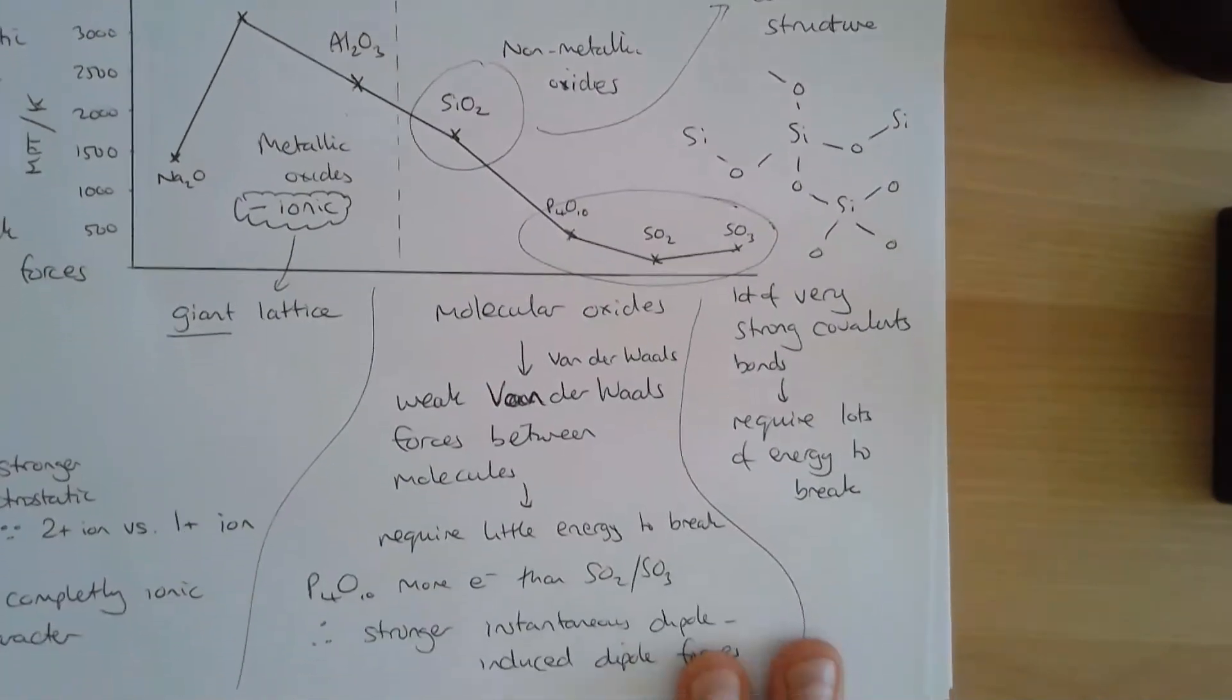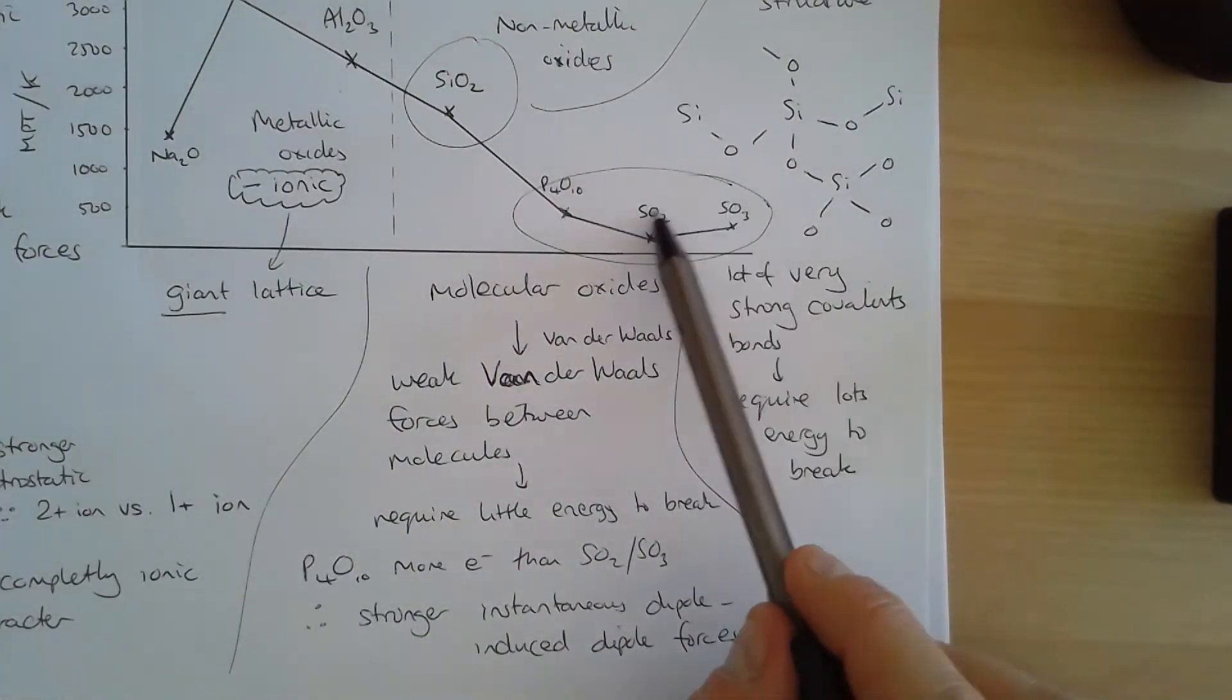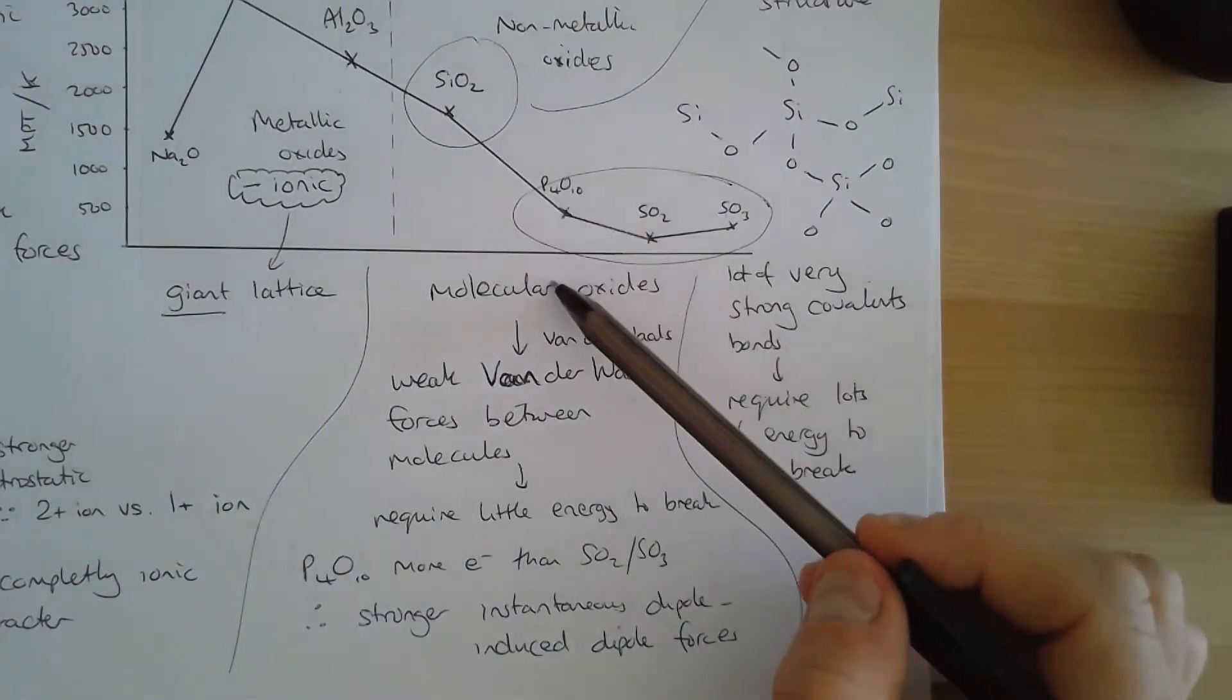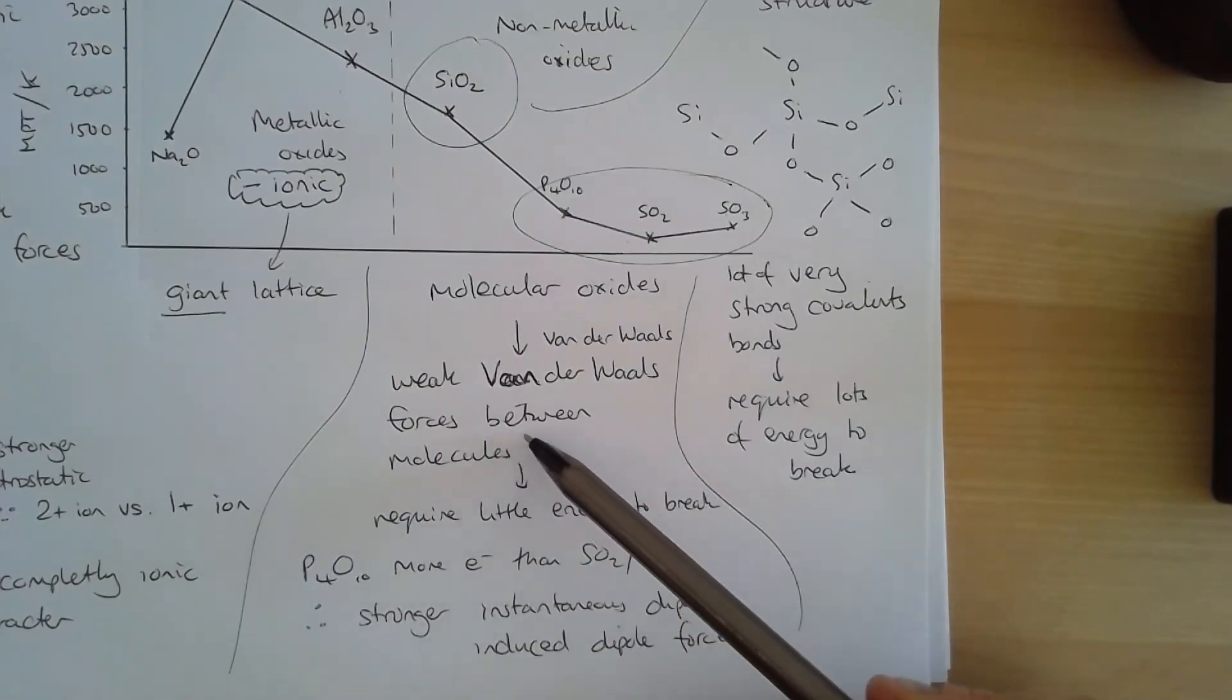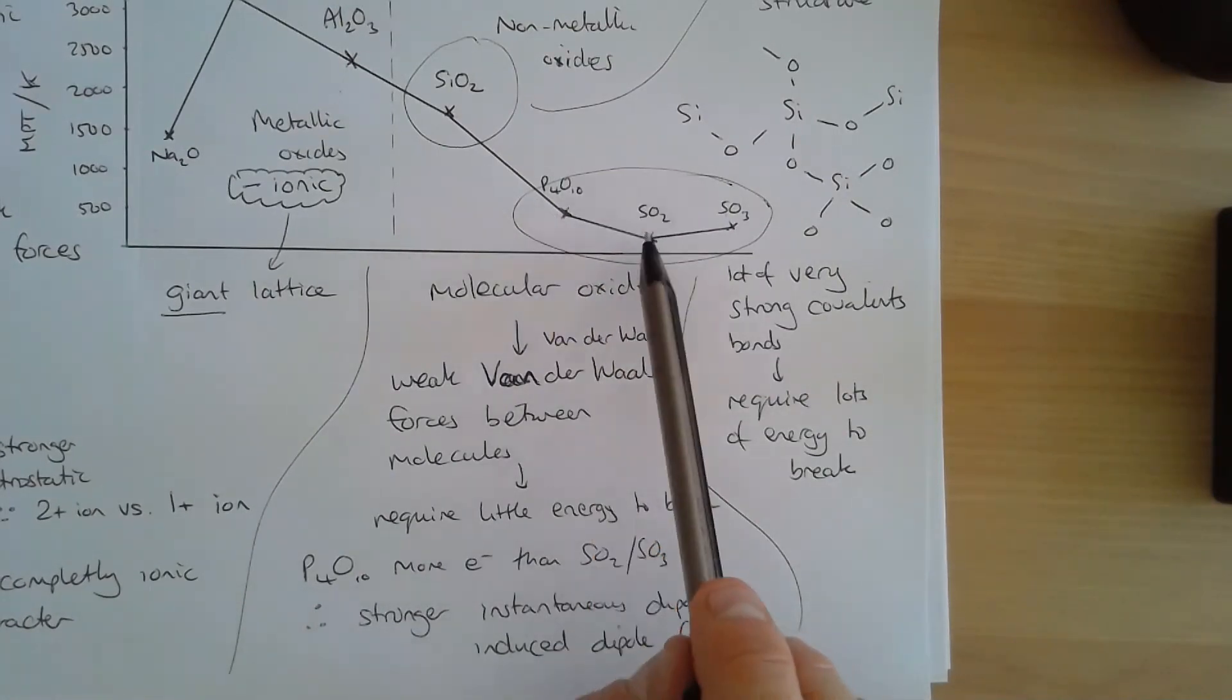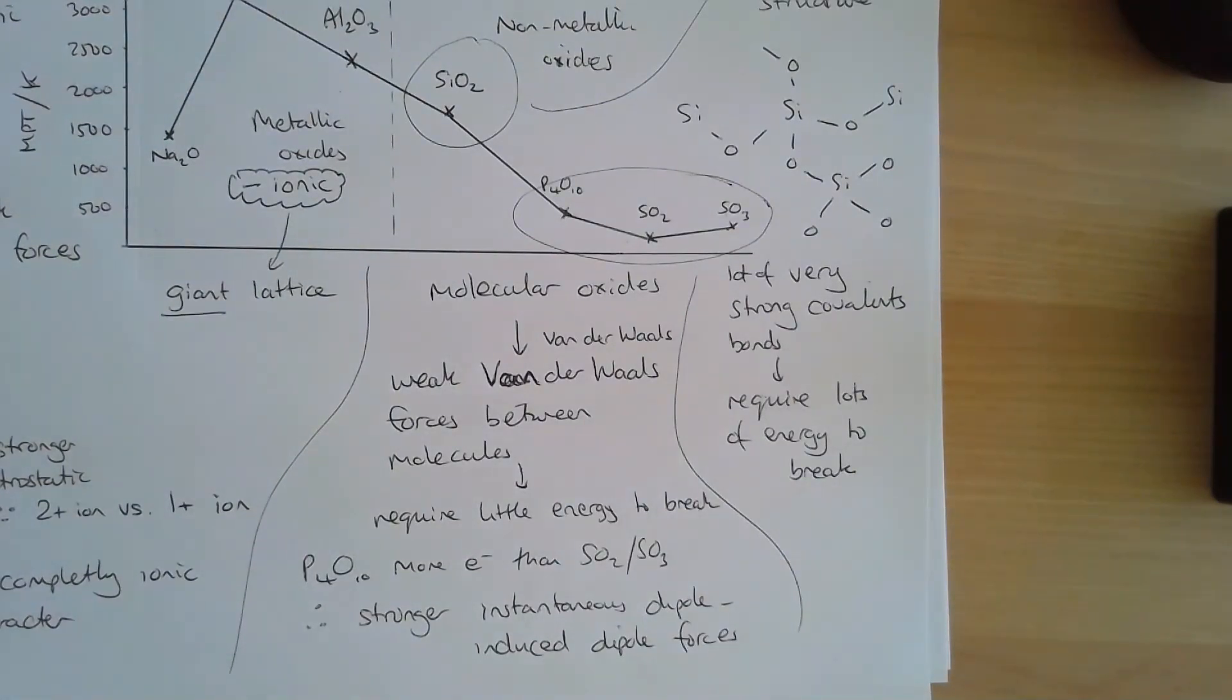And then finally, we have our molecular oxides, phosphorus oxides and the two sulfur oxides that we need to know about. These have weak Van der Waals forces between the molecules. They require little energy to break. We can explain that phosphorus oxide has a higher melting point than sulfur oxides because it has more electrons and therefore stronger instantaneous dipole induced dipole forces. Thank you very much.